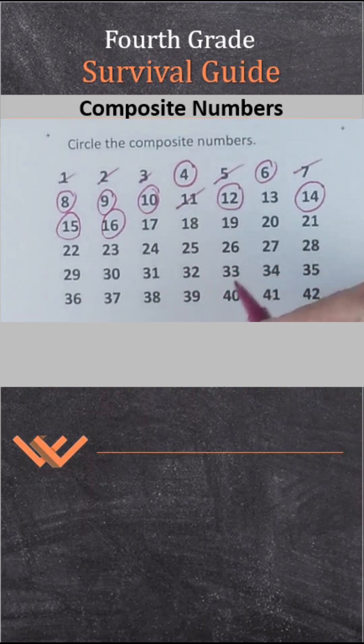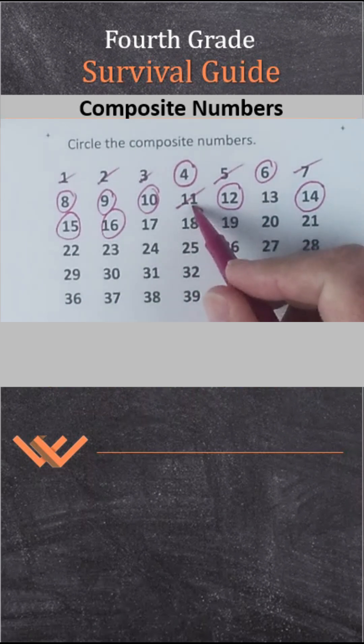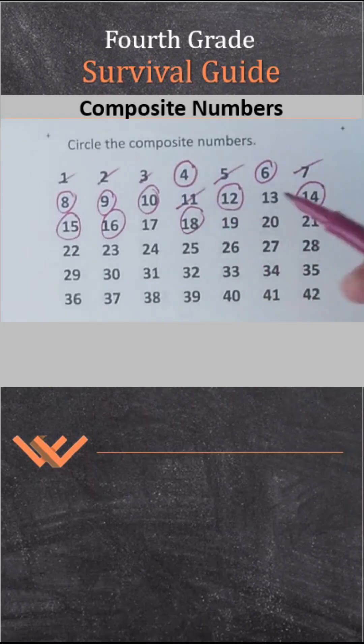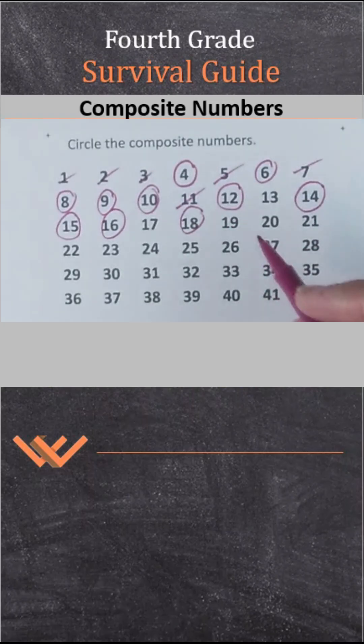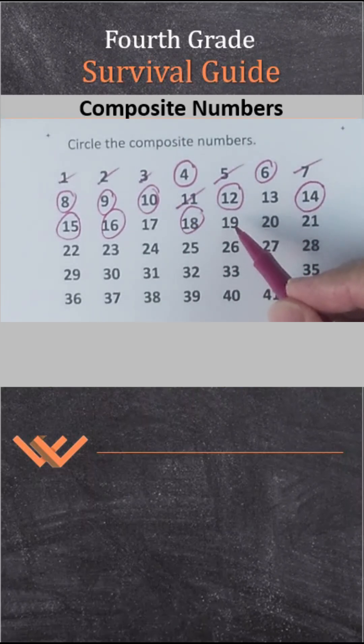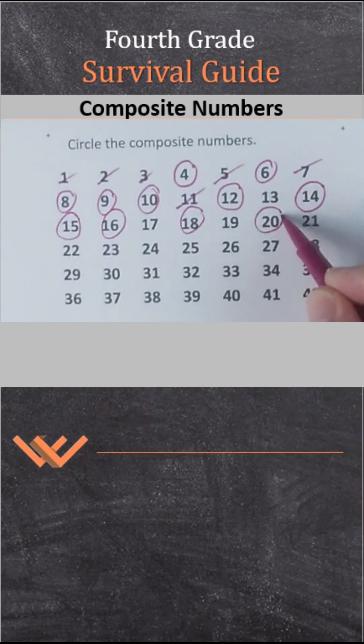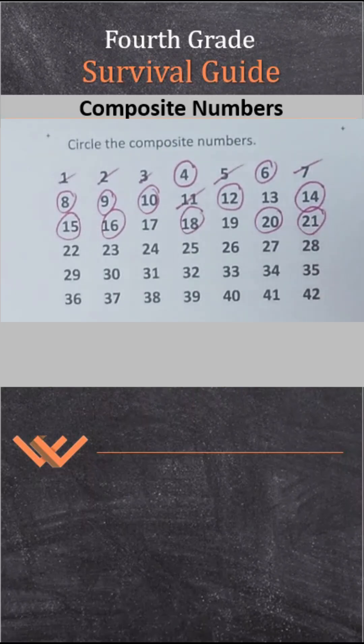17 is definitely a prime. 18 — 3 times 6. 19 is prime. 20 — 4 times 5. 21 — 3 times 7.